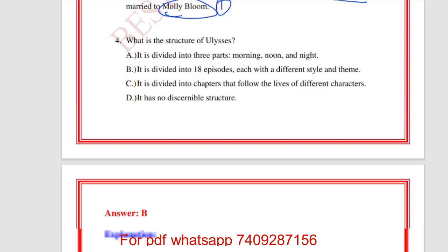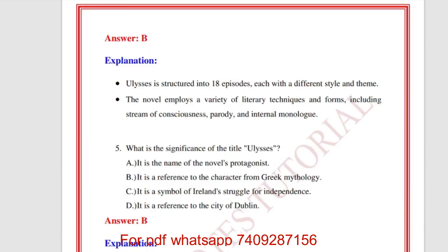What is the structure of Ulysses? The answer is B — it is divided into 18 episodes, each with a different style and theme. The novel employs a variety of literary techniques including stream of consciousness, which is the most important technique used in this work.